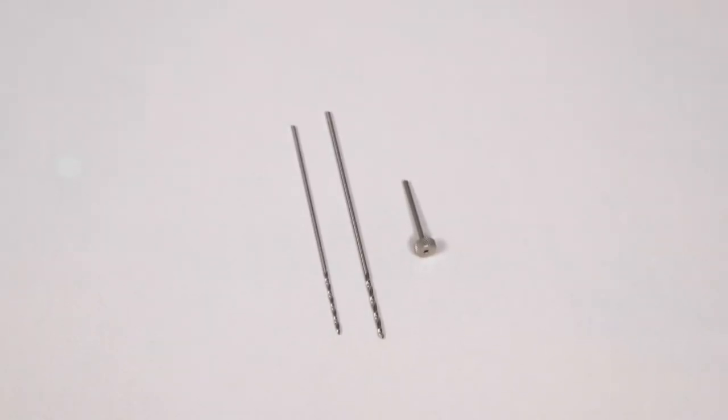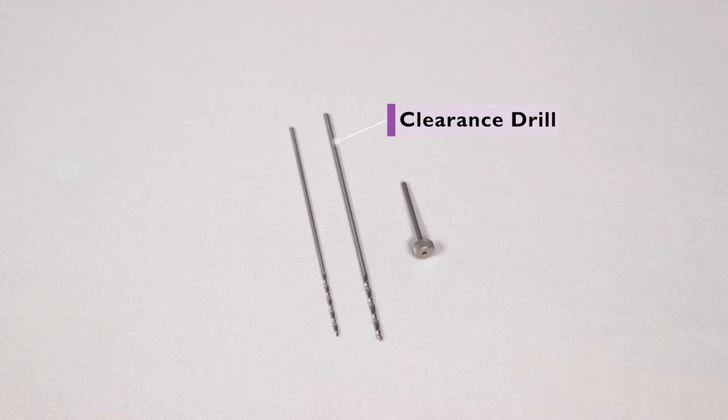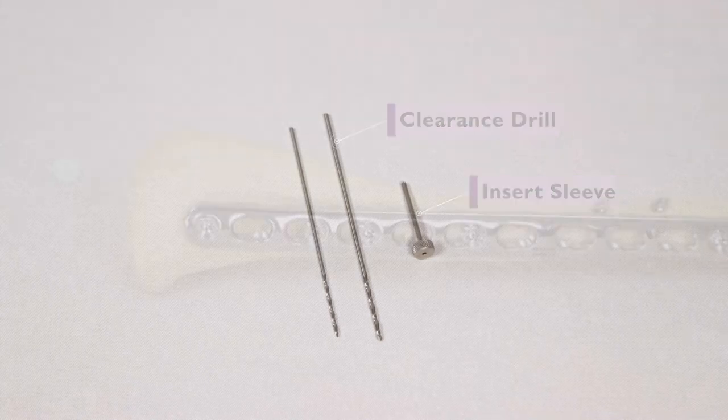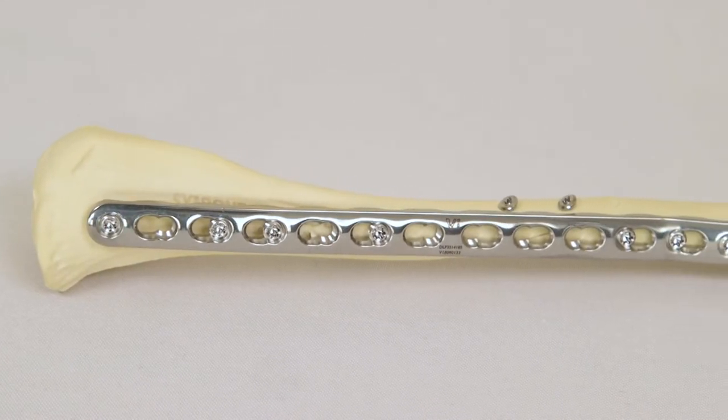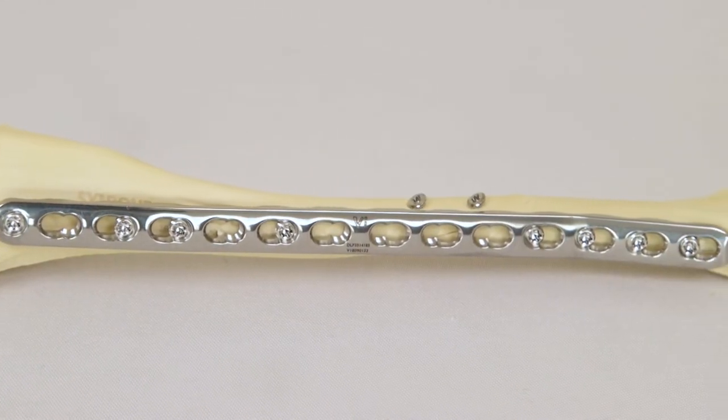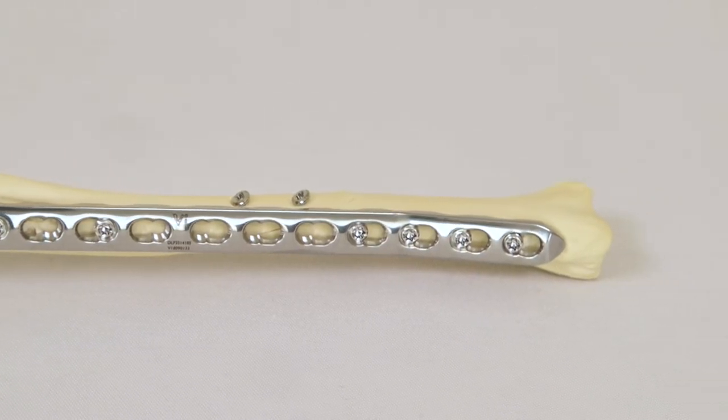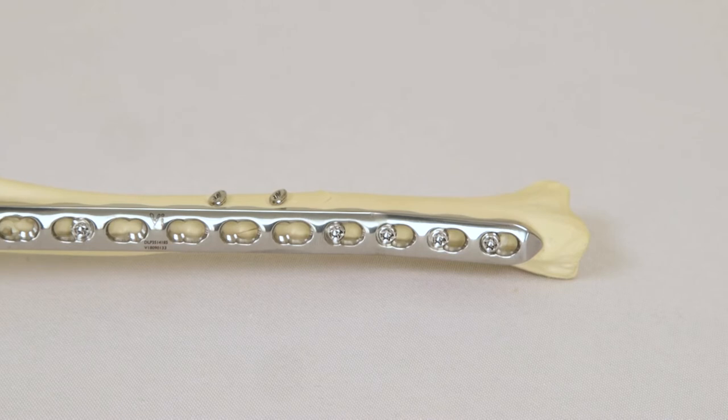Equipment is also required for the primary repair. In this example, we are using lag screws, so a clearance drill bit for the glide hole and an insert sleeve of the appropriate size will be needed. The lag screws can be placed through the DLP, although this is technically difficult. The primary repair is therefore usually performed prior to plate placement.